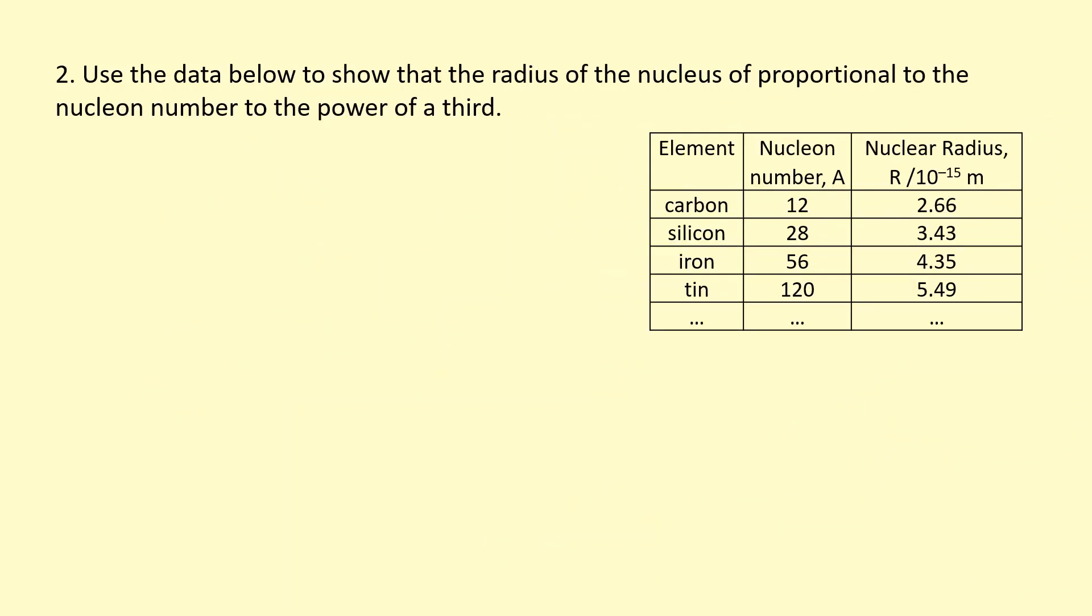In this question here, the question is already telling you that the radius is proportional to the nuclear number to the power of a third. But it wants you to prove that using the data here. So here's the relation that's trying to ask us to test: R is directly proportional to A to the third.